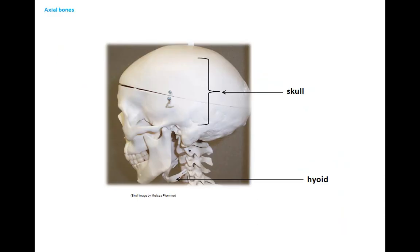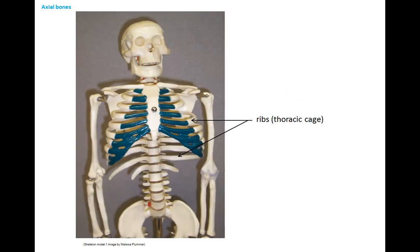Here are axial skeletal bones making up the skull, which protects the brain. Here is a view of the hyoid bone, which functions in supporting the tongue. Here are axial skeletal bones making up the rib cage. Humans have 12 ribs on each side.